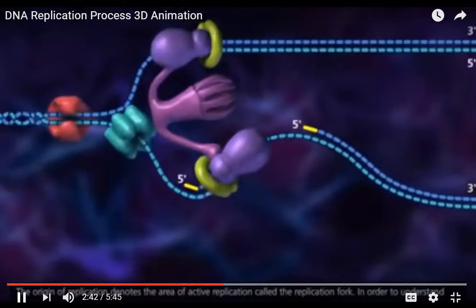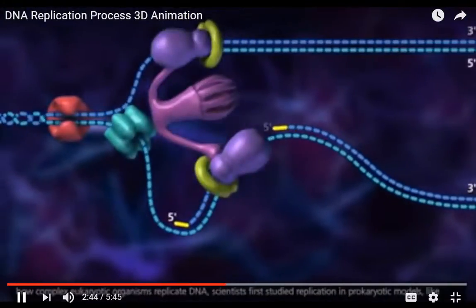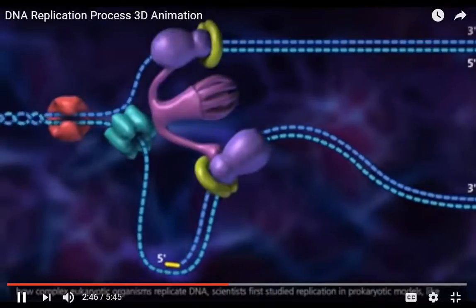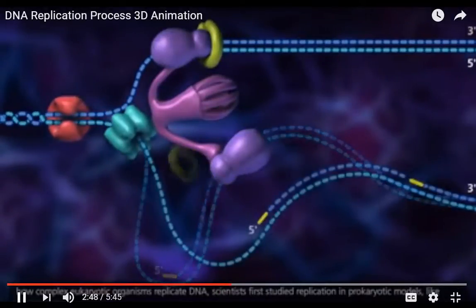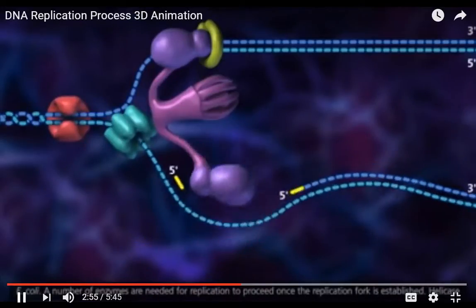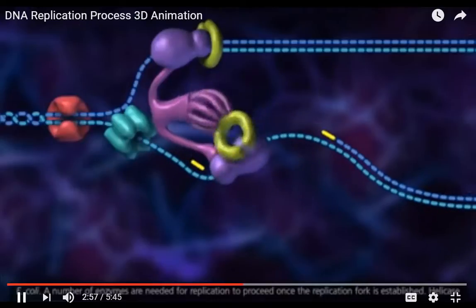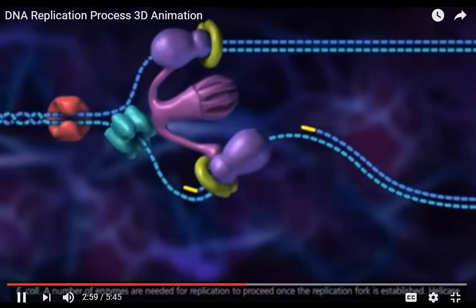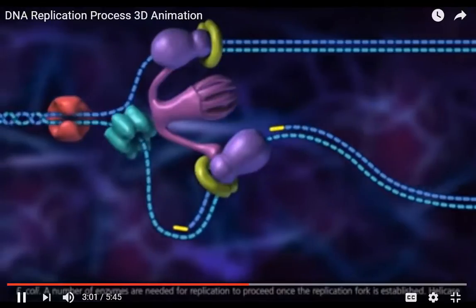In order to understand how complex eukaryotic organisms replicate DNA, scientists first studied replication in prokaryotic models like E. coli. A number of enzymes are needed for replication to proceed once the replication fork is established.